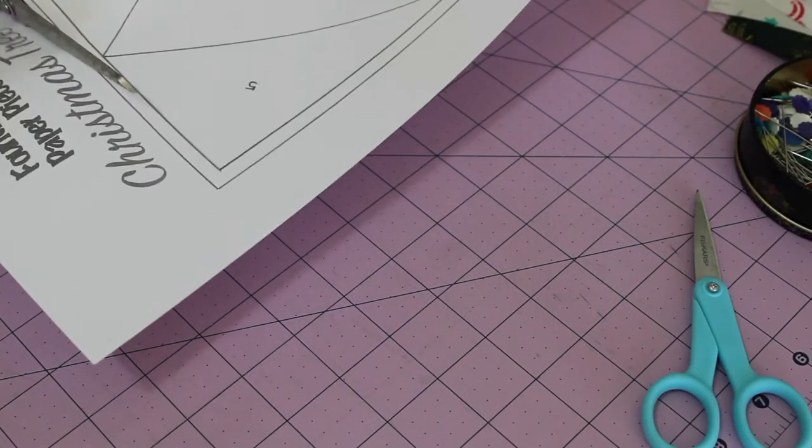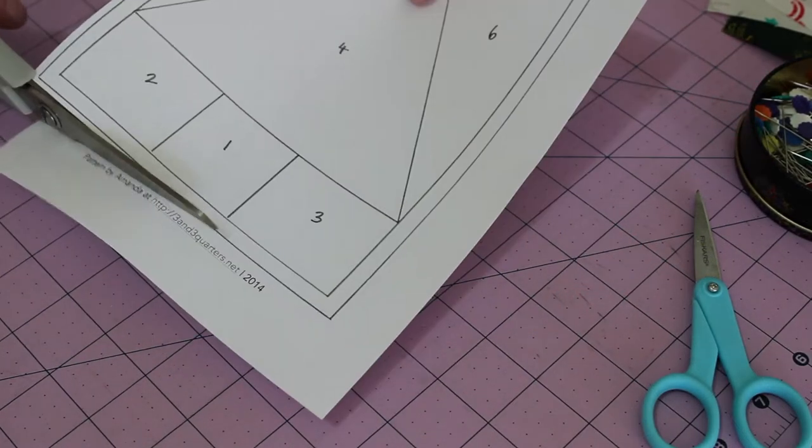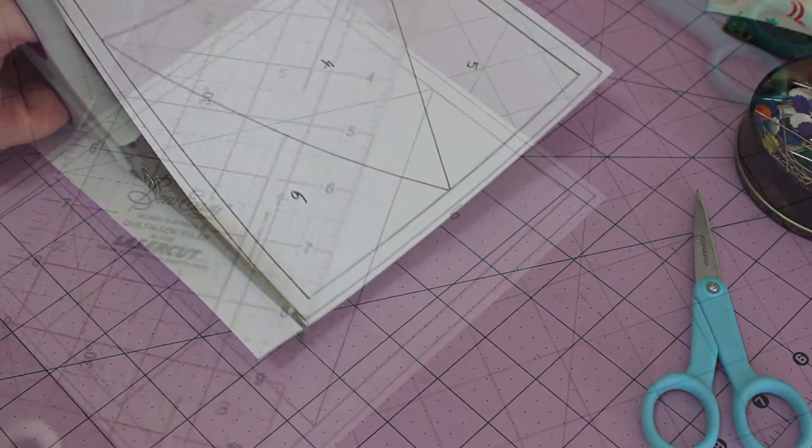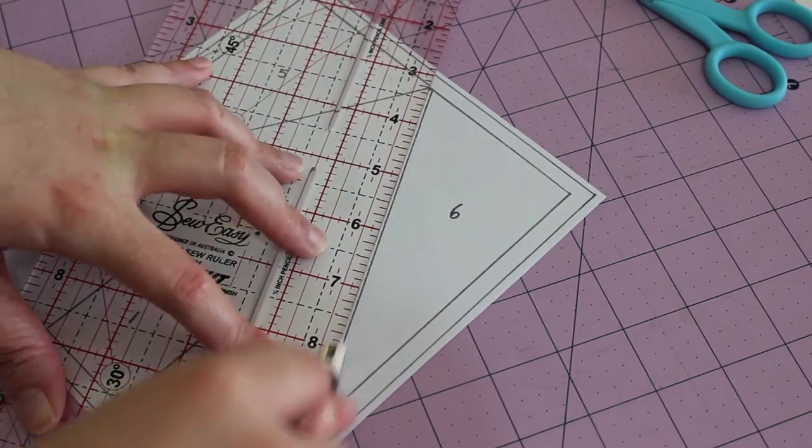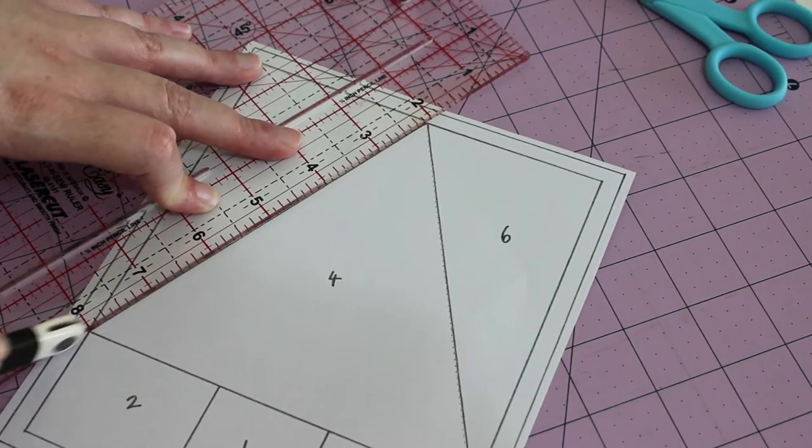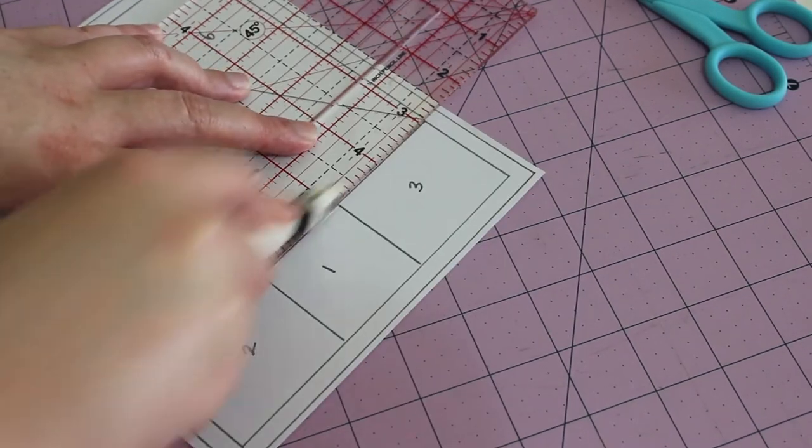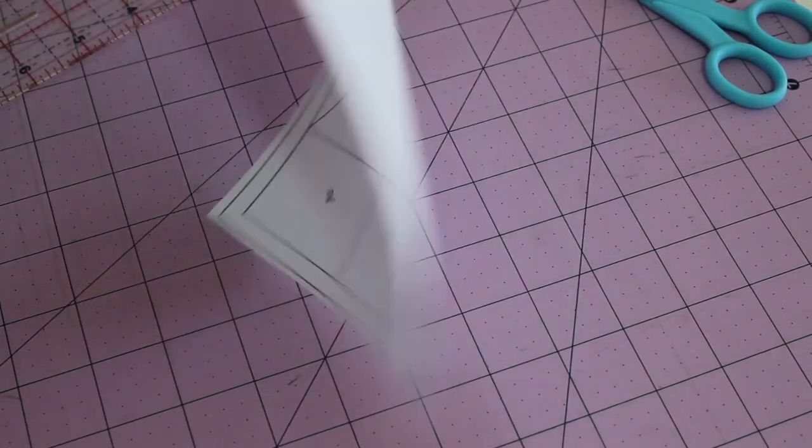To begin, roughly cut out the pattern around the outer edge using paper scissors. Then with a serrated tracing wheel, perforate each of the lines that you'll be sewing on top of. The back of the pattern should look a little like this.